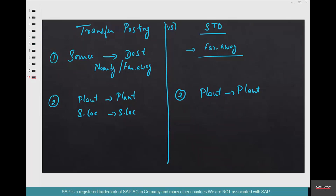A transfer posting gives you two different ways to do the same thing: one is via one-step, and the second is via two-step. A stock transport order by definition is two-step — there is no one-step stock transport order.